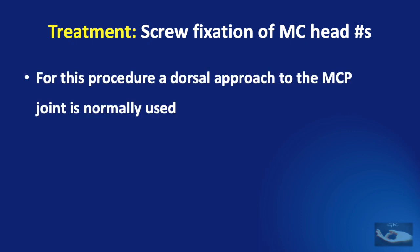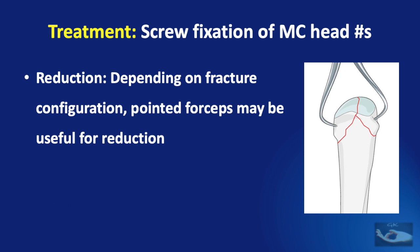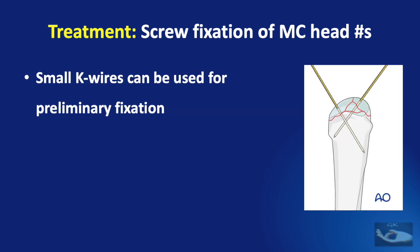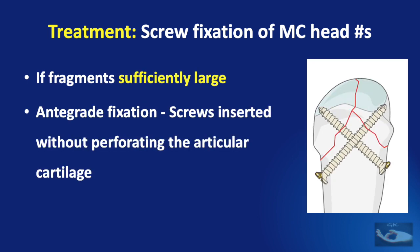For screw fixation of metacarpal head fractures, a dorsal approach to the metacarpophalangeal joint is used after splitting the extensor tendon. Pointed forceps are used for reducing the fractured fragments to avoid further injury. Once reduced, small K-wires can be used for preliminary fixation. If bony fragments are sufficiently large, antegrade fixation can be done — that is, screws inserted from proximal into the fragments.